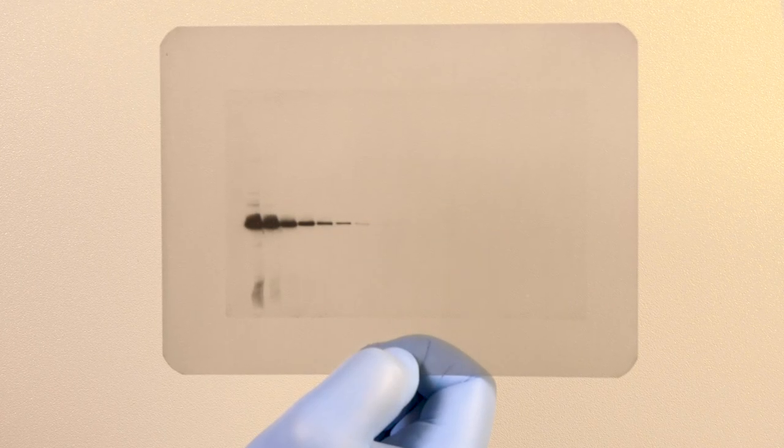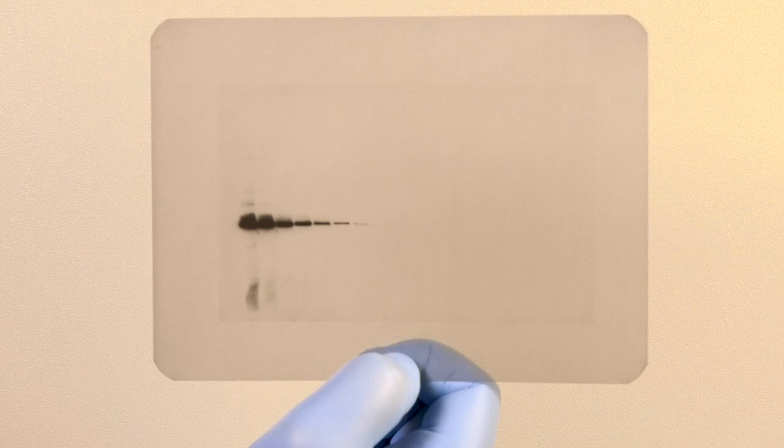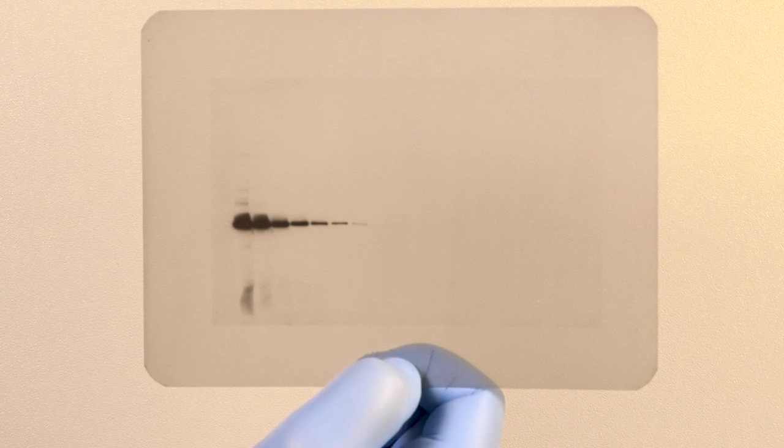The signal accumulation mode in ImageLab Touch software provides the most film-like experience and will make intuitive sense if you are transitioning from film to digital imaging. This mode produces a series of cumulative images of your blot and mimics taking several film images with increasing exposure time.